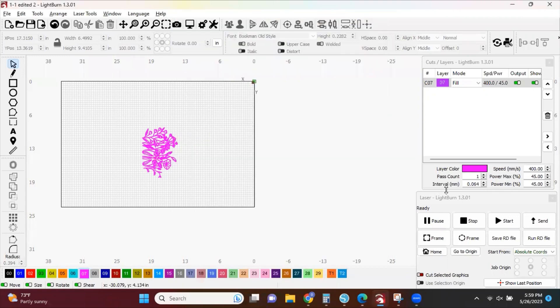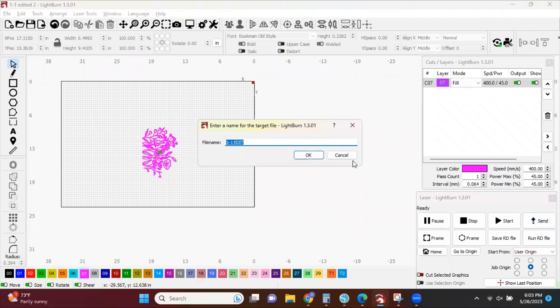And then we want to go to the start position and choose User Origin and make sure the center bubble is marked because we want it to start in the middle of our design. Then we can go ahead and send it to the machine. Give it a name and click OK.